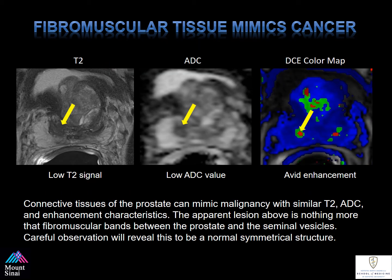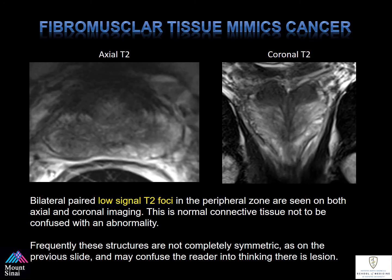Connective tissue of the prostate can mimic malignancy with similar T2, ADC, and enhancement characteristics. However, the apparent lesion is nothing more than fibromuscular bands between the prostate and the seminal vesicles. Careful observation will reveal these to be normal and symmetrical in nature. We colloquially refer to this as the rabbit ear sign — there are bilateral paired low-signal T2 foci in the peripheral zone seen on both the axial and coronal imaging. This is normal connective tissue, not to be confused with an abnormality.